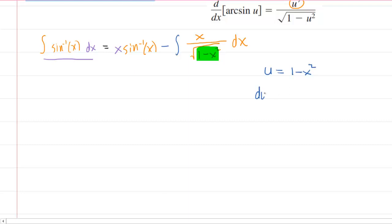And then we would take the derivative. So the derivative of 1 minus x squared is negative 2x dx. And then what I like to do is solve the equation for dx. To do that, we would divide both sides by negative 2x. So we can see that du over negative 2x is equal to dx.